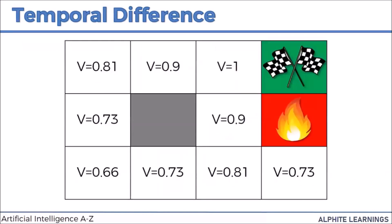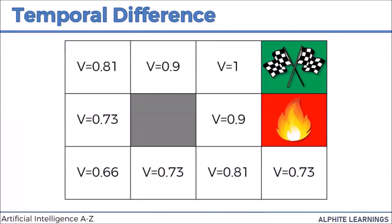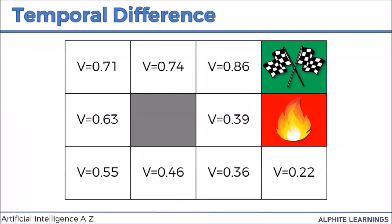In a deterministic search, if my agent is going to move only upward, it will go like that. If we calculate using the Bellman equation, we'll get some values. If it's a single direction, there's only one path. But if we consider the non-deterministic search and apply the same Bellman equation, we get different values — it starts considering all possibilities.